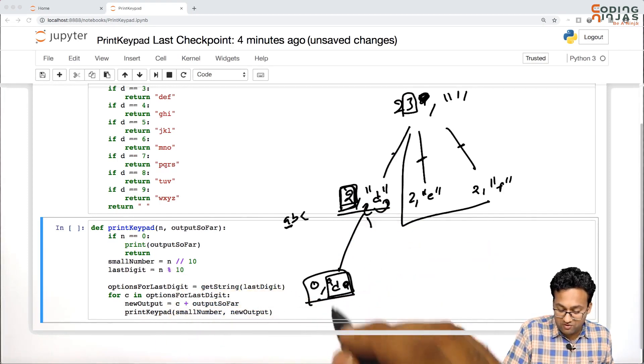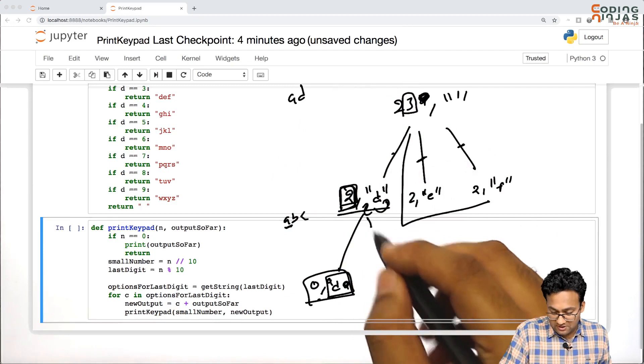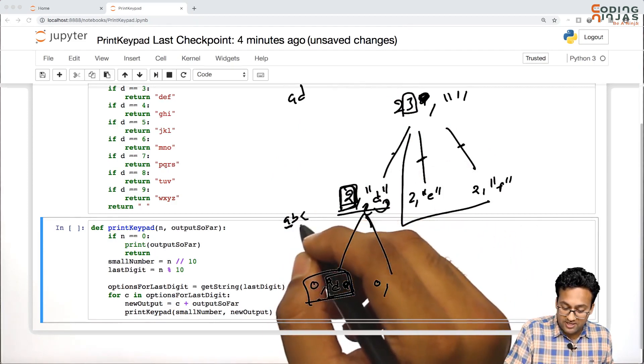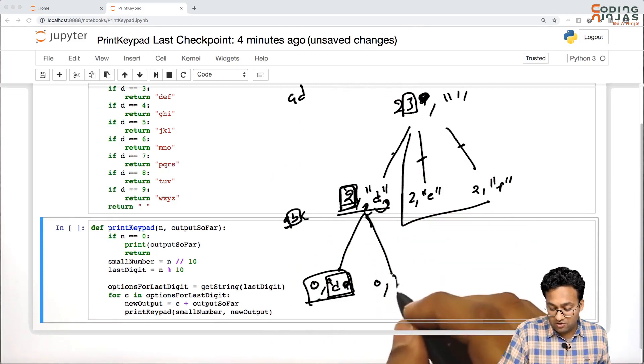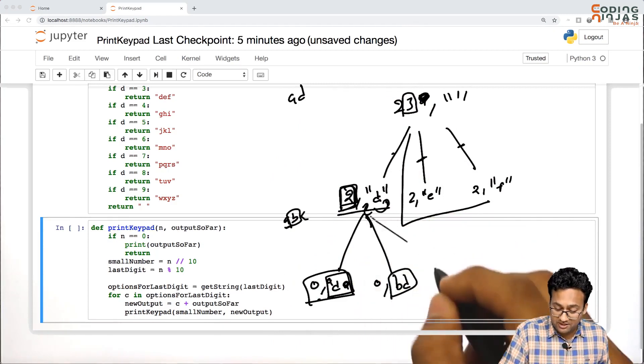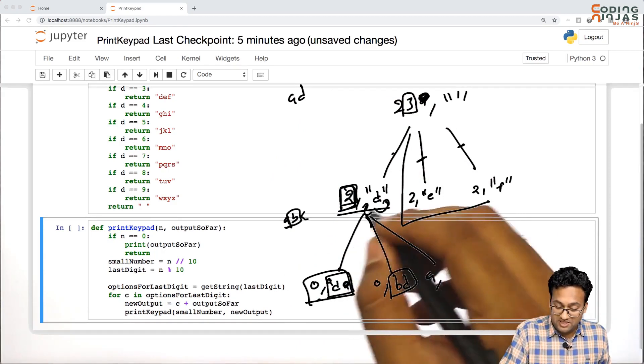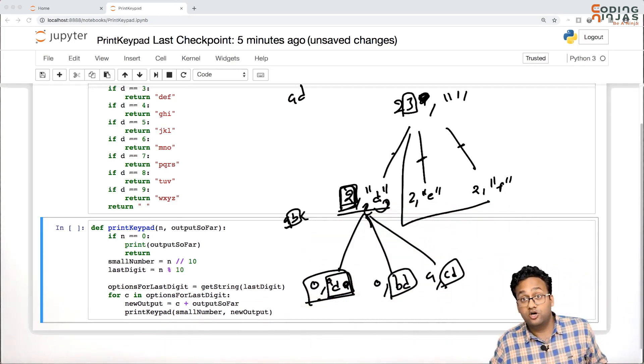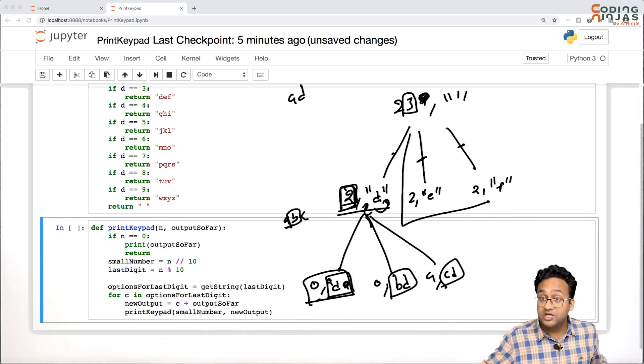We got a - it has to be not appended to the end but to the beginning, so 'ad'. As soon as you reach here, this is your base case, you will print 'ad' first. Then you will call to the second option for 2 which is b, so you'll call on 'bd', then 'cd', and so on. That's how all the combinations will get printed.